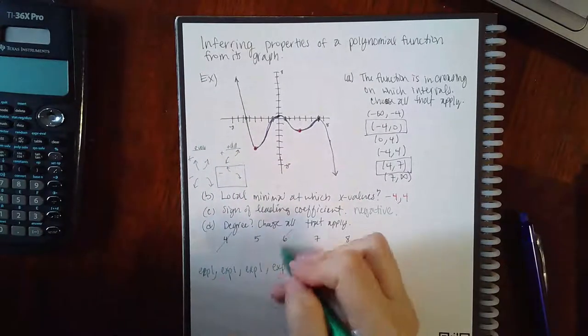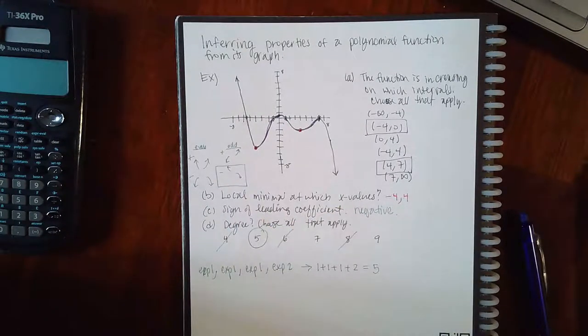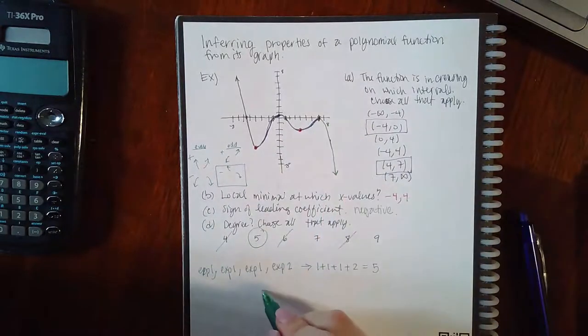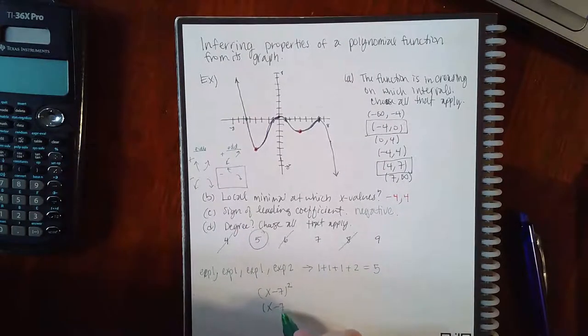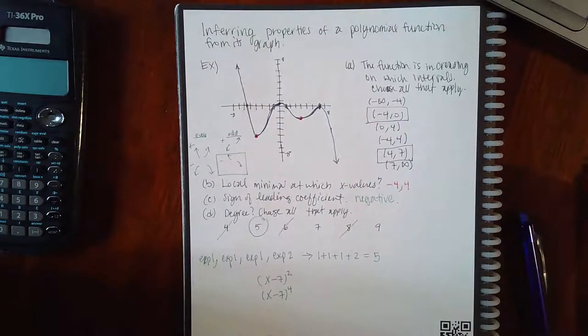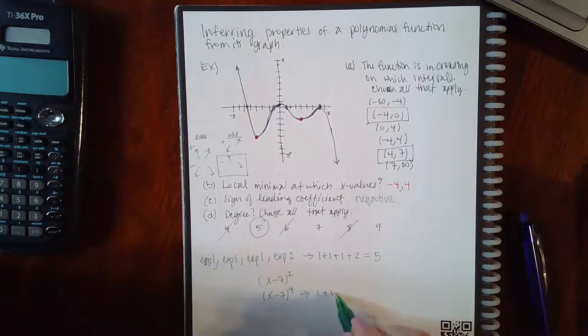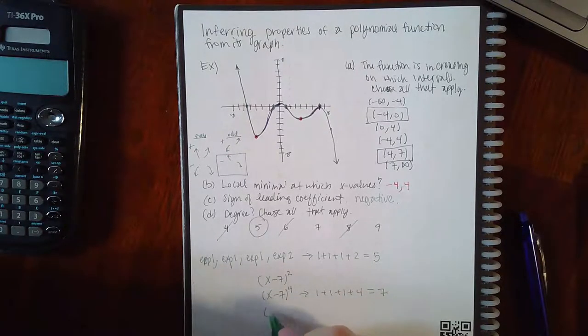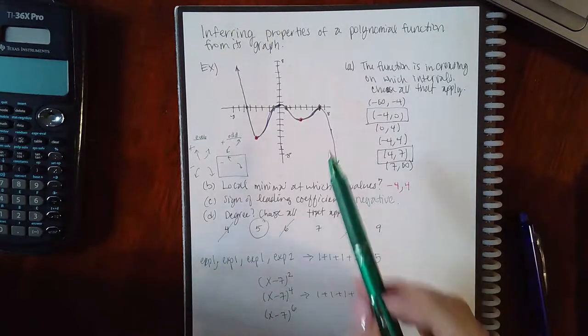But we mentioned that the exponent needed to be odd because of the end behavior. So it definitely cannot be four, six, or eight. Now it should be five. However, what happens if instead of this being a square, instead of x minus seven having a square, what if it had a fourth power? It would still bounce like that, but you'd have one, one, one, and then four, which means you could have seven as an exponent.